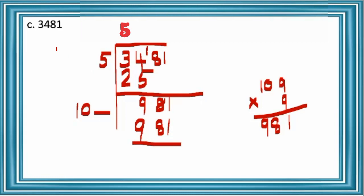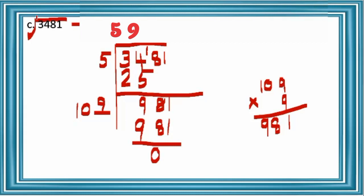So 981 — exact number we got. Write 9 at the right side of 10 and in the quotient place also. 981 minus 981 is 0. So the square root of 3481 is equal to 59.